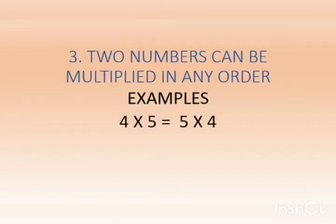Look here. 4 multiplied by 5 is same as 5 multiplied by 4. This is the reason we have written here 4 multiplied by 5 is equal to 5 multiplied by 4.